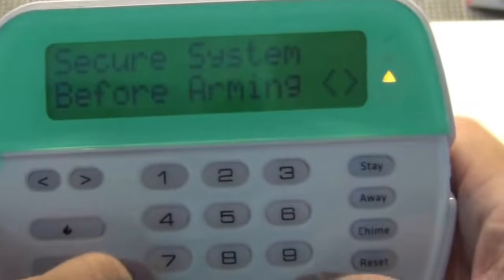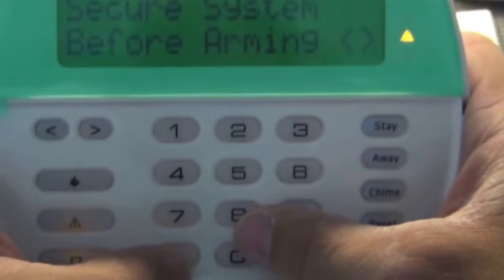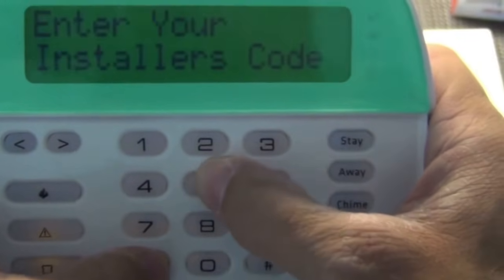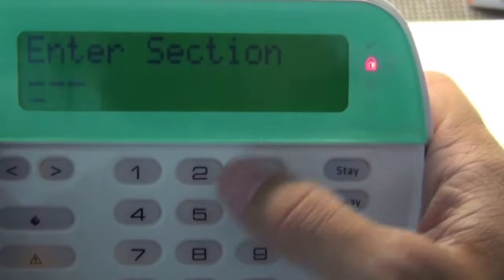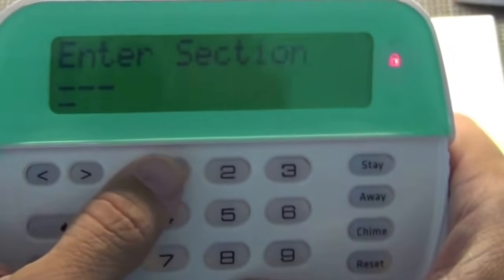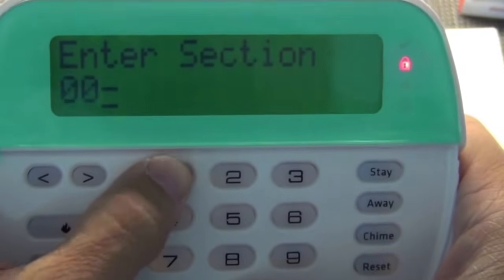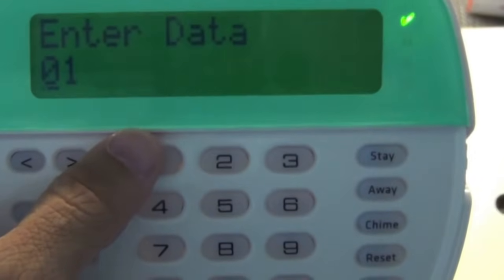So the next thing to do is the next step will be enter programming. You will hit star eight, five, five, five, five, which by default is the installer code. Some people consider it programming code. We're going to intersection 001.